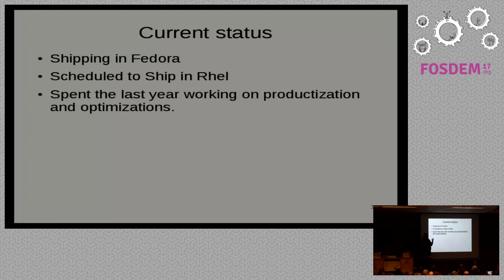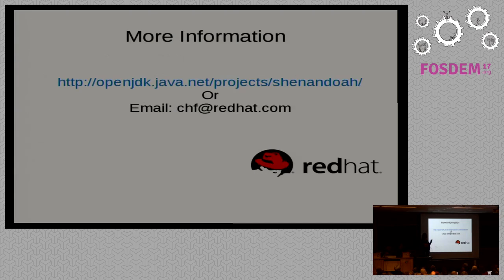We ship in Fedora. If you run Fedora 25, it's just -XX:+UseShenandoahGC and you can try it in Java 8. We're scheduled to ship in the next release of RHEL — I can't promise that, but that's the current schedule. We spent the last year working on productization and optimizations; we're much more stable and getting much better performance. If you have any questions or want to ask where we got these Shenandoah sweatshirts, here's my contact info. I'll now turn it over to Alexei, who's going to do the demo.